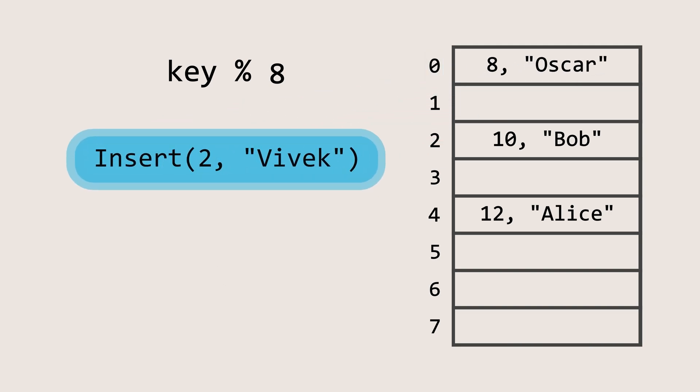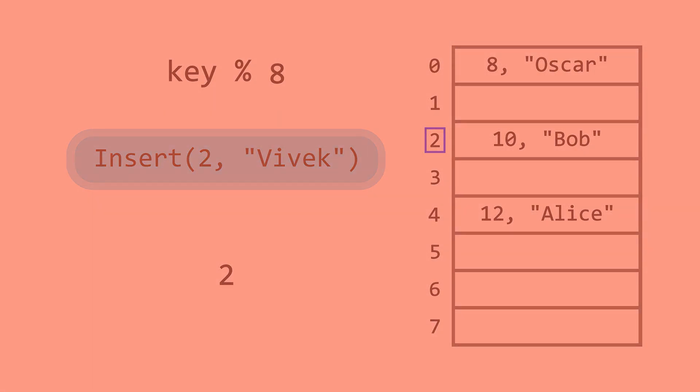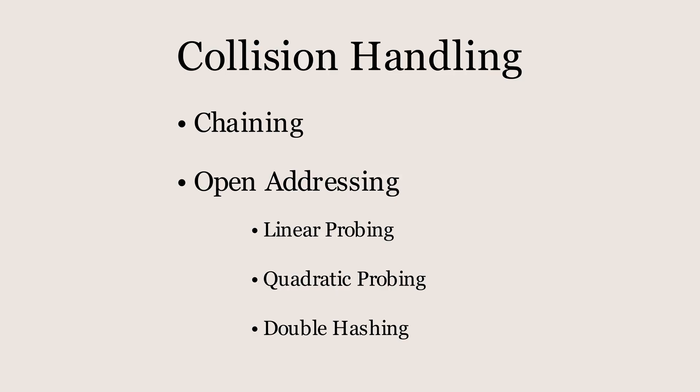Next, let's insert the value Vivek with the key 2. This one is interesting because when we pass the key 2 through the hash function, it gives the index 2. However, index 2 is already occupied, so we can't store the value there. This, ladies and gentlemen, is known as a collision. A collision occurs when the index provided by the hash function is already occupied. There are multiple ways to handle collisions.